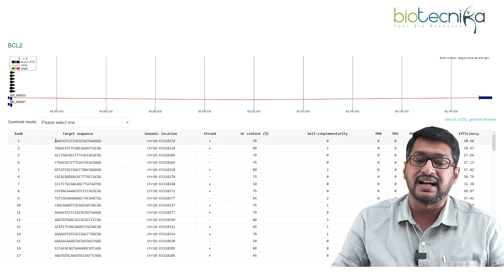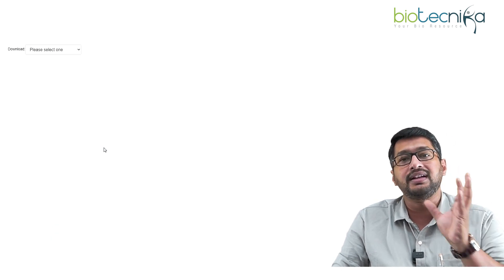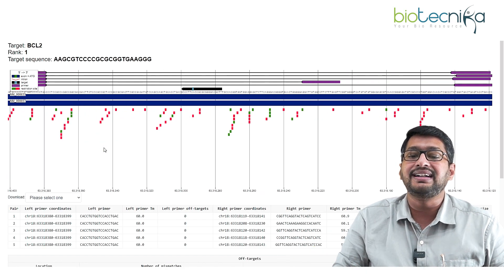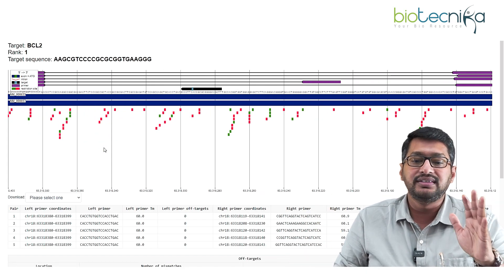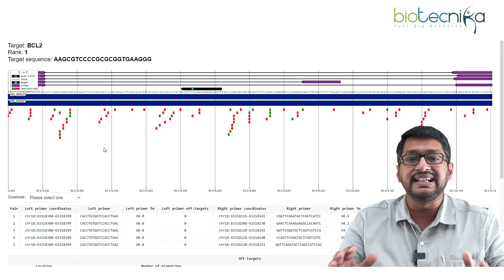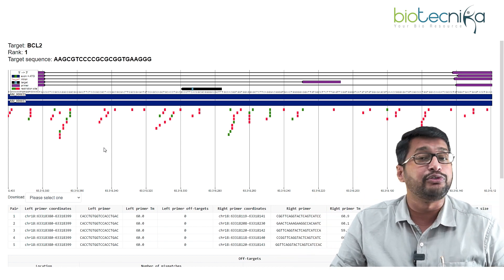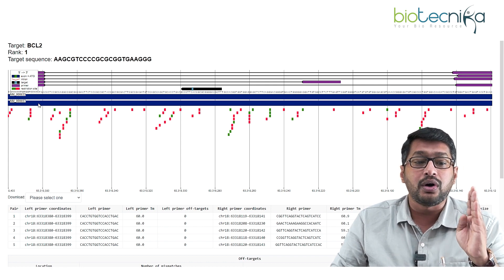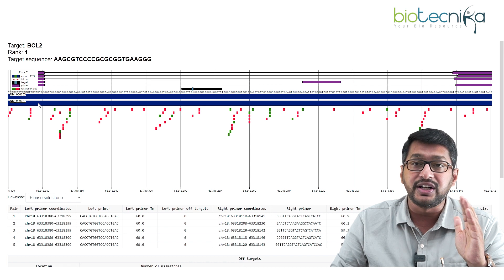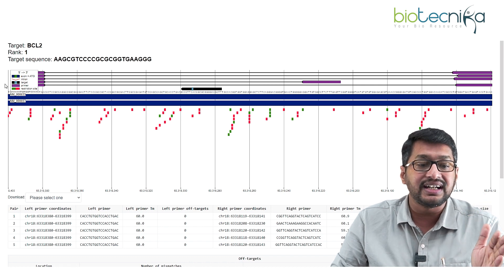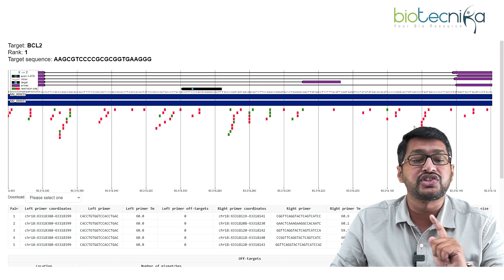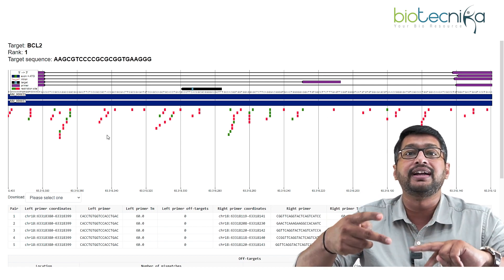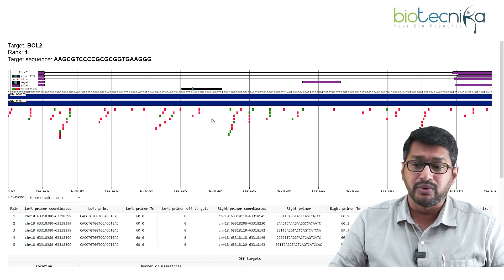Once I identify my target sequence, I can copy it or click on it to open a dedicated new window for primer design. In this new window I can see the number of exons, where the introns are located, where my target is, the various restriction sites, and where exactly my primers can amplify the target sequence.